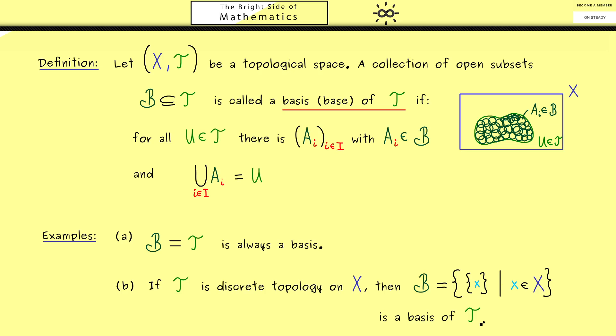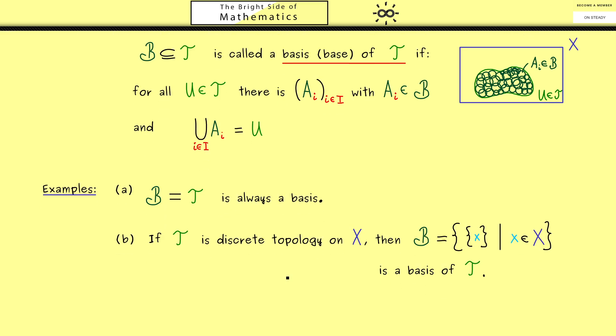Then if we take all these subsets, we have a basis of the topology. This shouldn't be hard to see because each set can be written as the union of its elements.